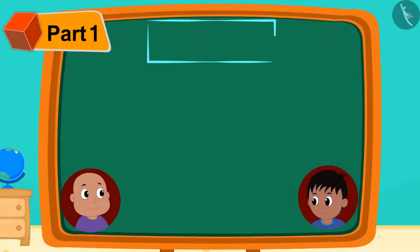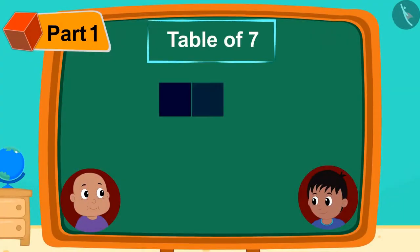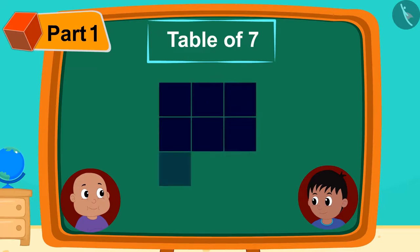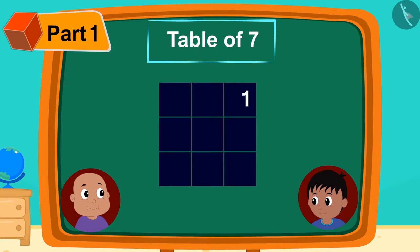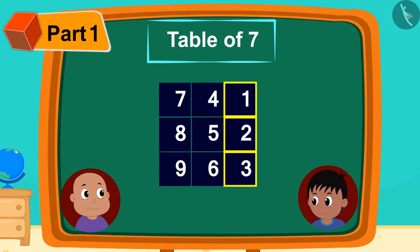Now Raju made a structure similar to the table of 3 for a table of 7. But this time, Raju started writing numbers from 1 to 9 from this box. Then, next to the digits written in the first line, he wrote 0, 1, 2.